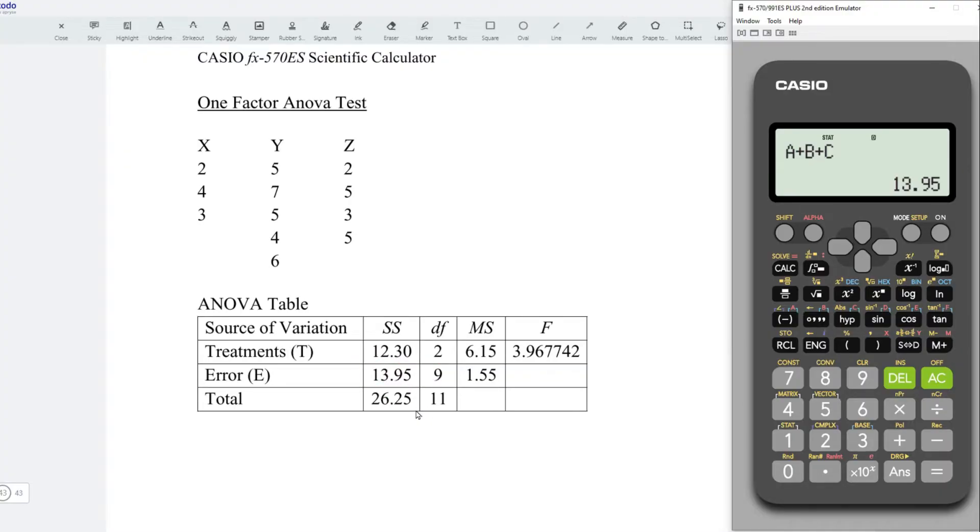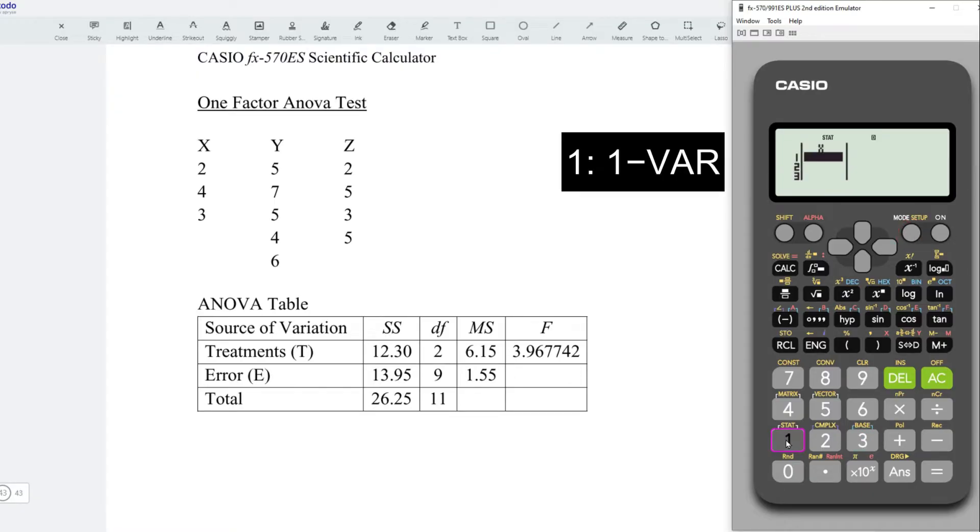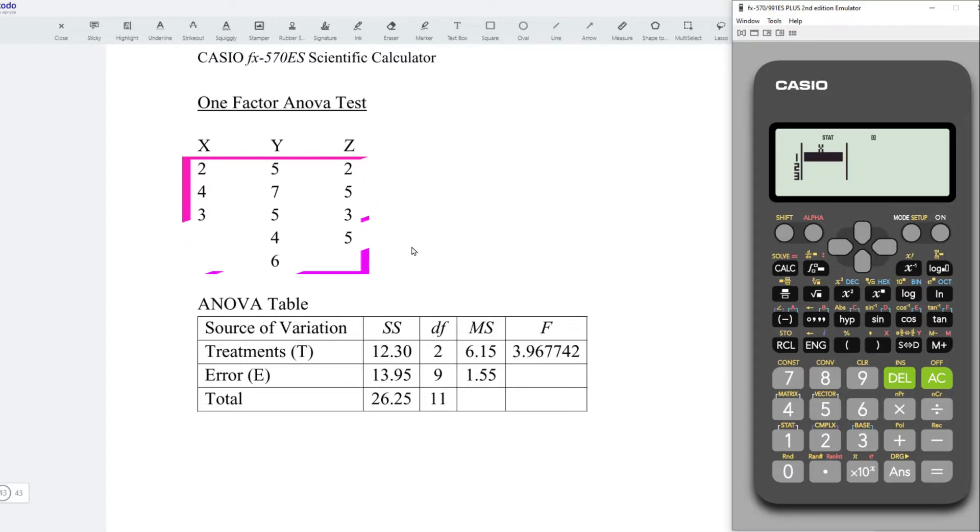Next, let's determine the sum of square total. Press on mode, statistic, one variable. Enter whatever values that we have. We have 2 equal, 4 equal, 3 equal, followed by 5 equal, and so for the rest of the values.